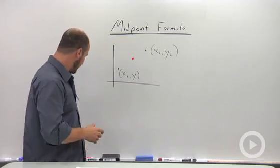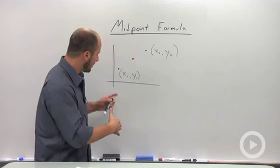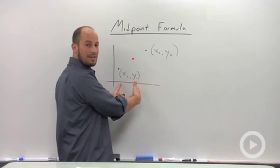How we actually end up finding it is just the average of the x values and the average of the y values. So our x values are going to be here and here. Our middle is just going to be right in the middle.